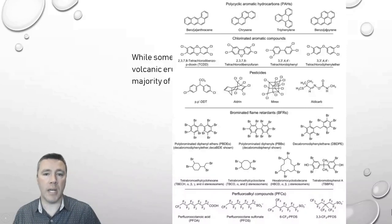So, persistent organic pollutants are, of course, carbon-based, and oftentimes contain halogens as well.